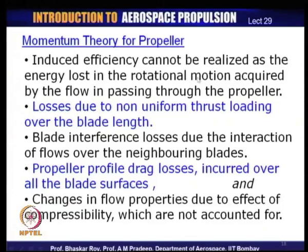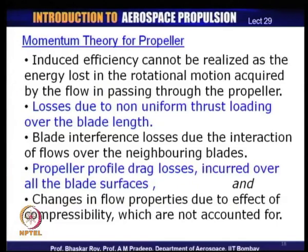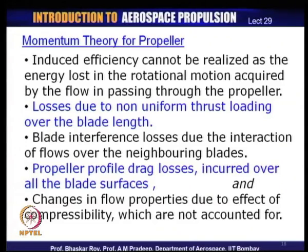The second point is losses due to non-uniform thrust loading over the blade length. Over the length of the blade approximated here with the actuator disc, loading is not uniform — we have assumed uniform loading over the entire actuator disc, but in an actual blade that may not happen. The third point is blade interference losses due to interaction of flows over neighboring blades — in the actuator disc we assumed a porous continuous body with no mass and 100 percent porosity.